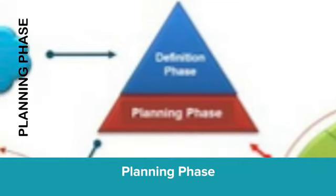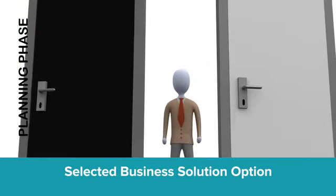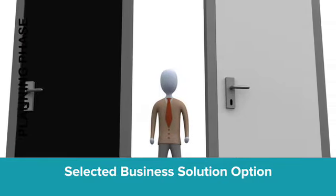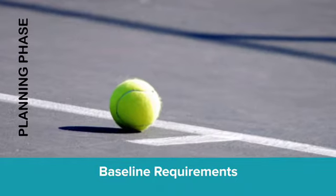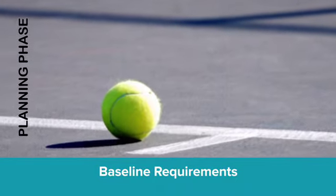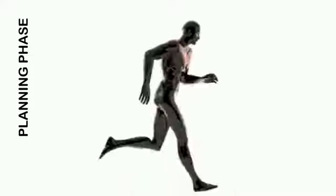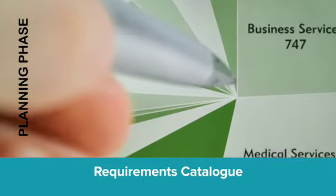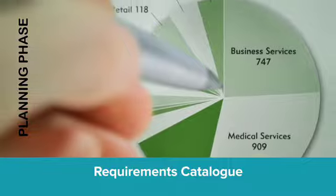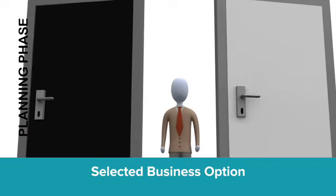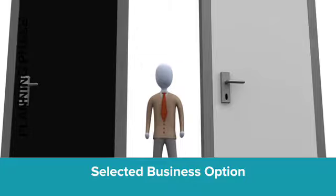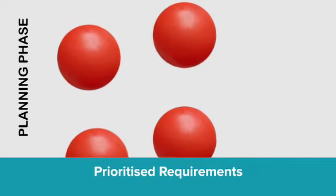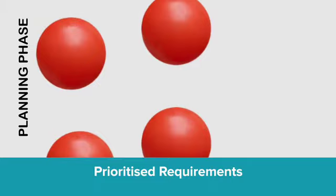The planning phase begins once you have a selected business solution option and a direction. Start working to baseline the requirements at a high level and create the conceptual model of the selected business solution, supported by models and prototypes. Update the requirements catalogue and ensure that business requirements are properly mapped to the business benefits that relate to the selected business solution option.